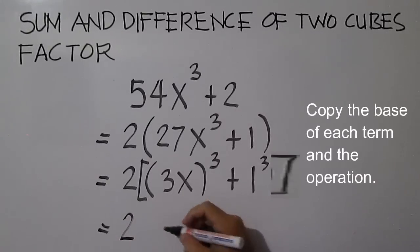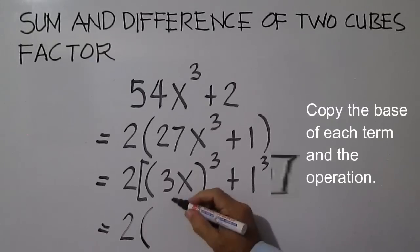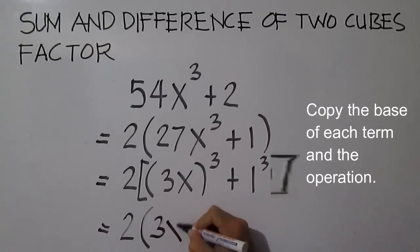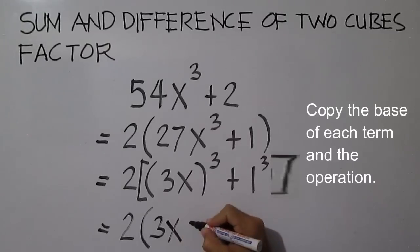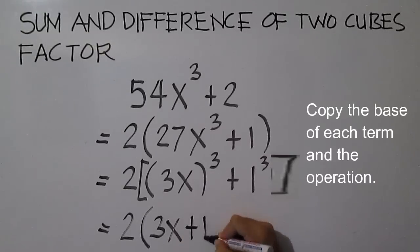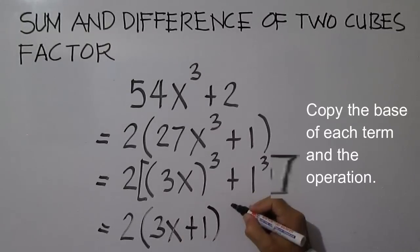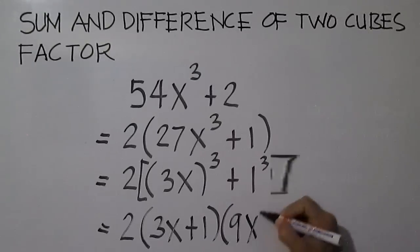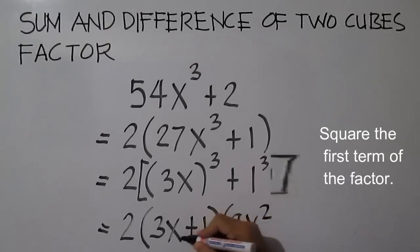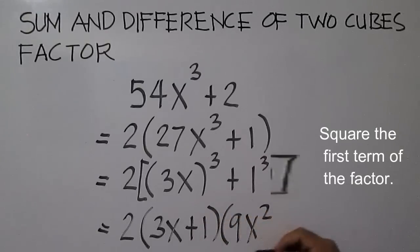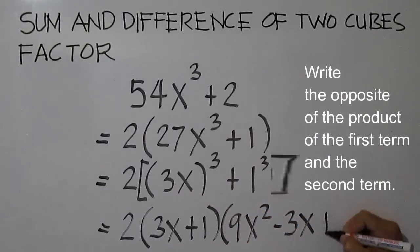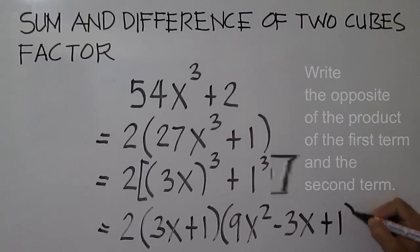Copy the base and the operation: 3x plus 1. Multiply the first term and the second term and write the opposite: negative 3x. Then square the second term: 1 squared is 1.